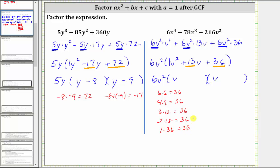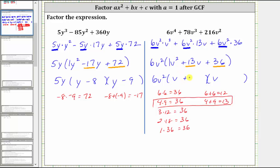But again, we're looking for the factors that have a sum of positive 13. 6 + 6 = 12, which is not 13, but 4 + 9 = 13, and therefore we can stop. The winning factors are positive four and positive nine, which means one binomial factor is (v + 4) and the other binomial factor is (v + 9). Now we have the given expression factored completely.